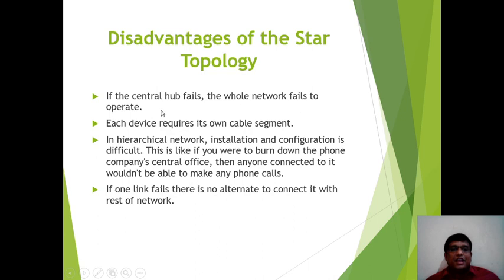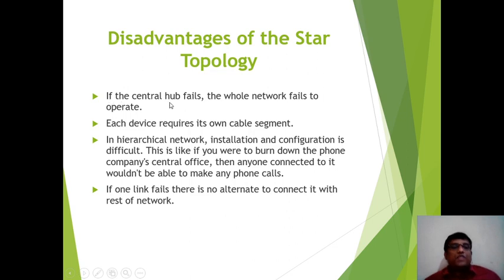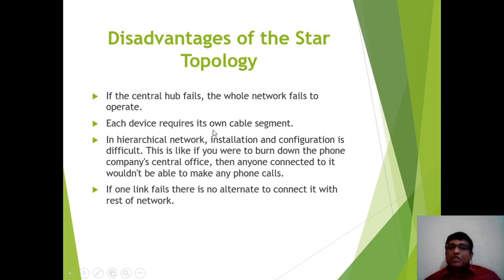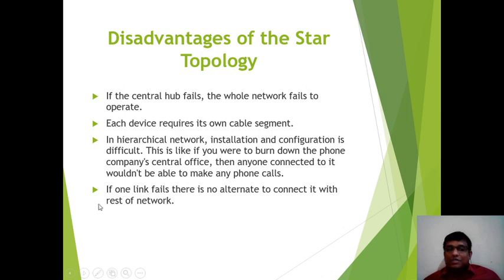Disadvantages of Star Topology: the main problem is that if the central hub fails, the whole network fails to operate. Each device requires its own cable segment. In a large network, installation can be difficult. If one link fails, there is no alternate path to connect with the rest of the network.